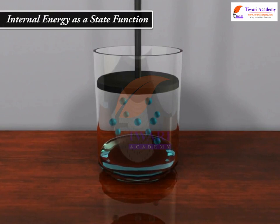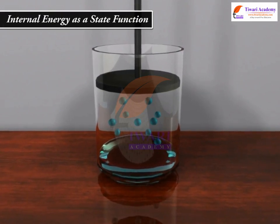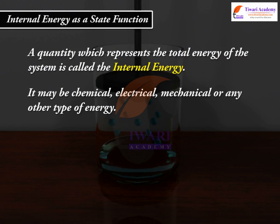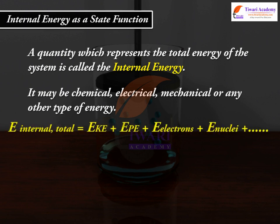Internal energy as a state function: a quantity which represents the total energy of the system is called the internal energy. It may be chemical, electrical, mechanical, or any other type of energy. E_internal_total is equal to E_KE plus E_PE plus E_electrons plus E_nuclei, and so on.